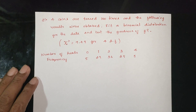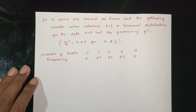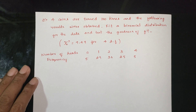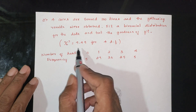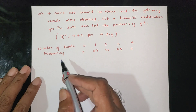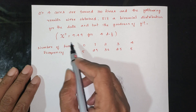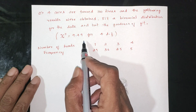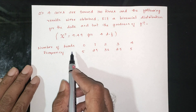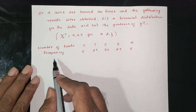This question is: four coins are tossed 100 times and the following results are obtained. Fit a binomial distribution for the data and test the goodness of fit. The tabulated chi-square value with 4 degrees of freedom at 5% level of significance, G² is 9.49. The number of heads equals the observed frequency.